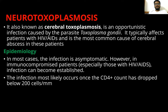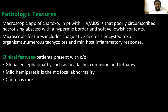Epidemiology: in most cases the infection is asymptomatic. However, in the immunocompromised patient, especially with HIV or AIDS infection, it can become established. The infection is likely to occur once the CD4 count is less than 200 cells per mm³. Pathologic features: the macroscopic appearance shows poorly circumscribed necrotizing abscess. Microscopic features include coagulative necrosis, invasive toxo organisms, numerous tachyzoites, and minimum post-inflammatory response.